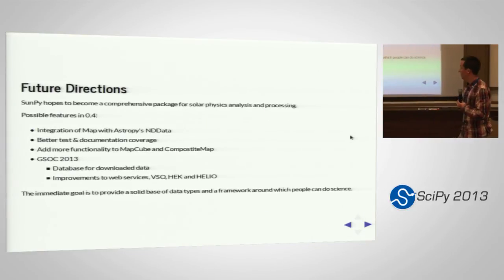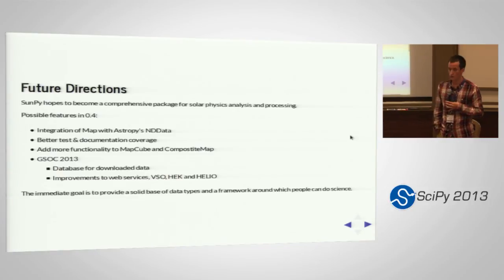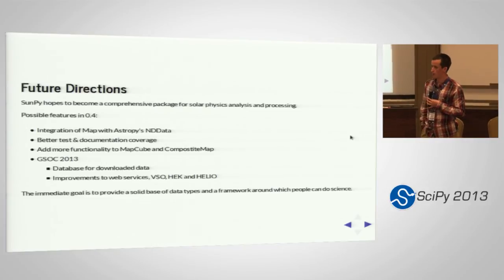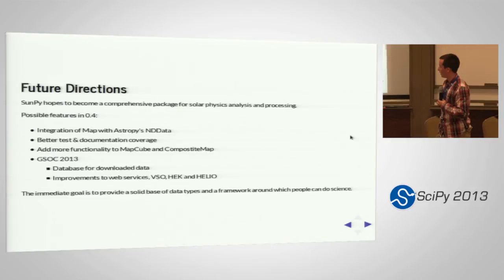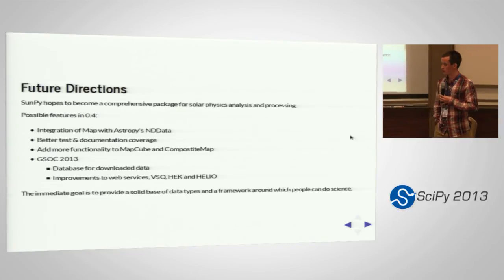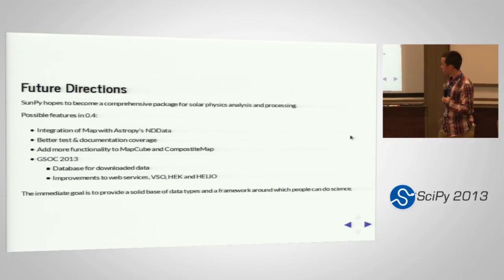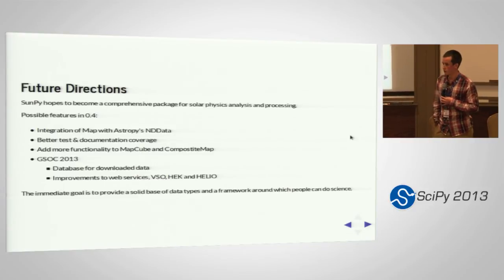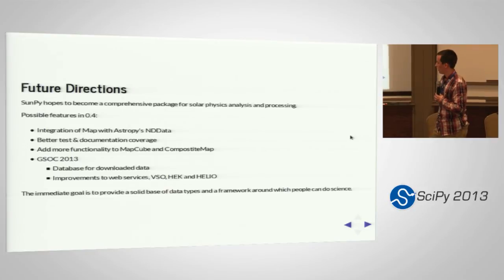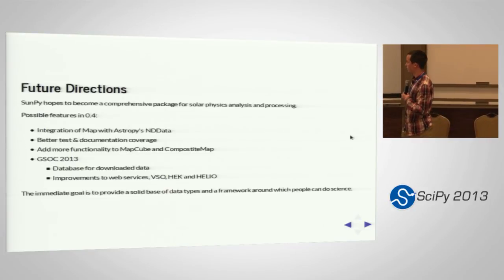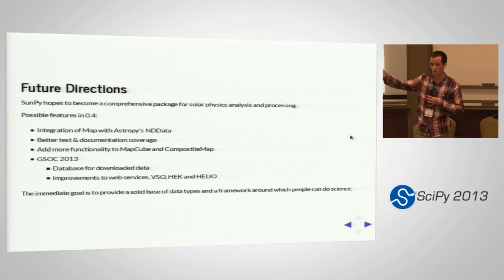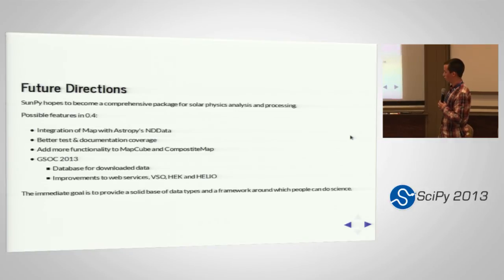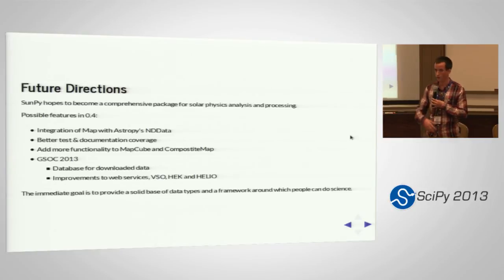For future directions, one of the other core SunPy developers and I have rewritten most of the map module. We now have an object in map which is an NDData stand-in, to be replaced by AstroPy's NDData object in the near future. We wish for better tests and documentation coverage. Our map collection objects could do extra work like fine image alignment. We have two Google Summer of Code students this year: one is working on implementing a database, either local or remote, so every time you call the SunPy data downloaders it sticks the data in a database — so if you call the same data again it finds it locally rather than going back to the internet.